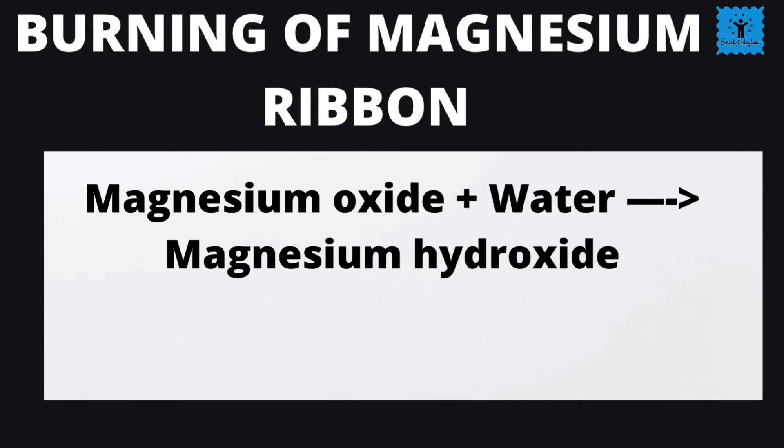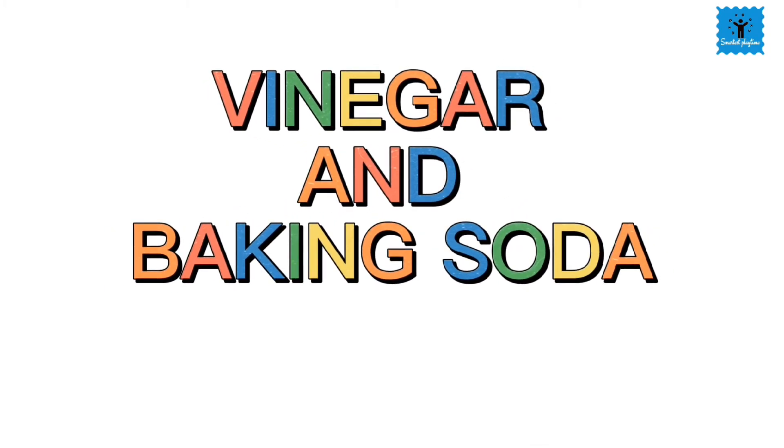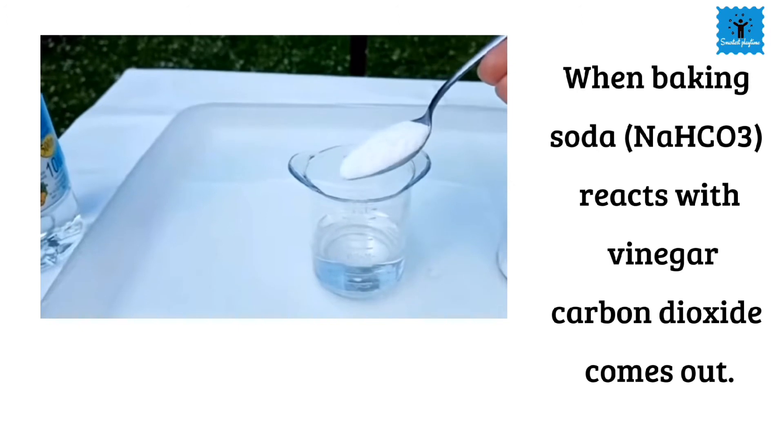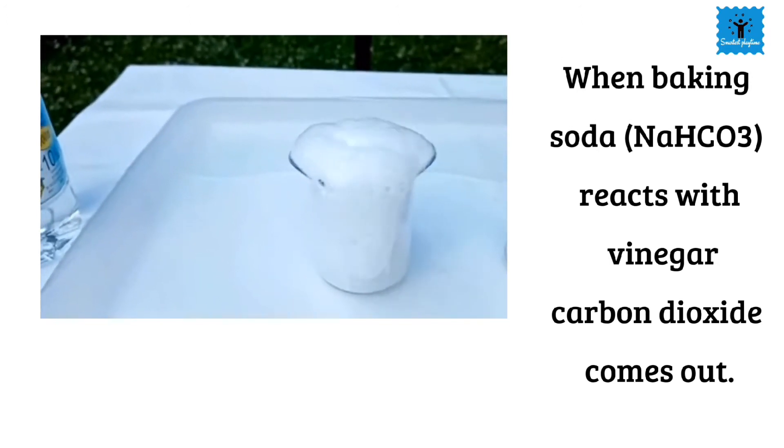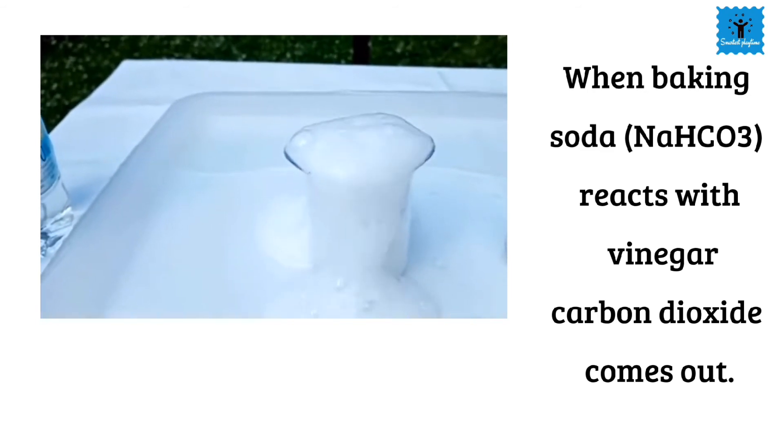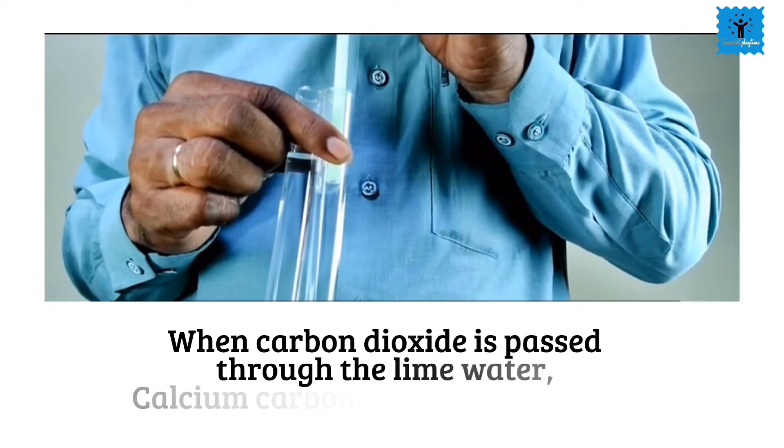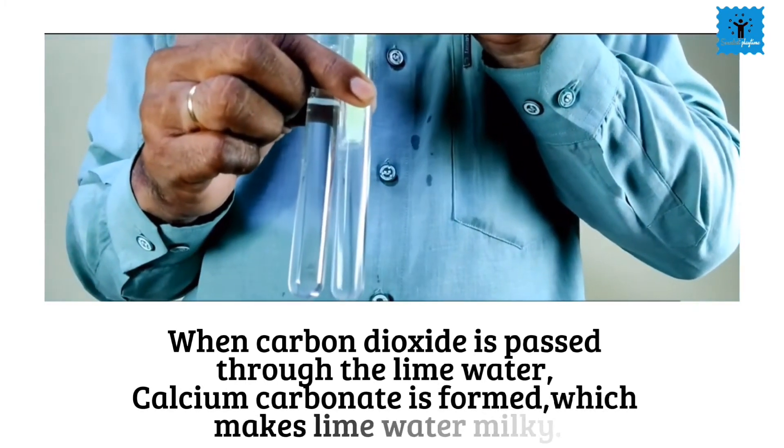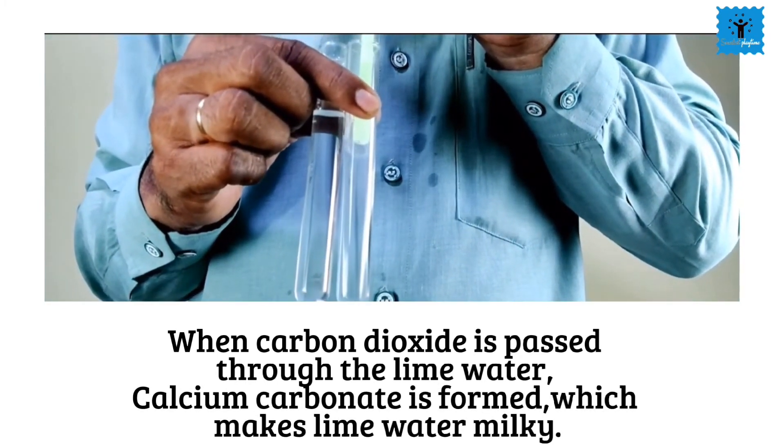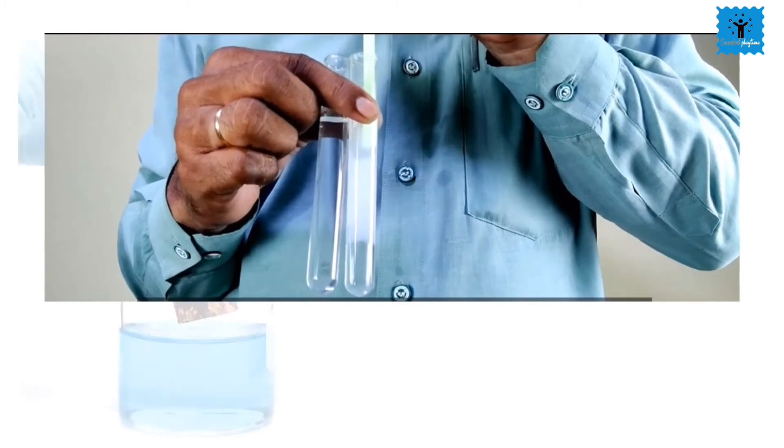Another example of chemical change is the reaction between vinegar and baking soda. Add little amount of baking soda in vinegar. You would hear a hissing sound and see bubbles of a gas coming out. This gas is carbon dioxide. When carbon dioxide is passed through lime water, calcium carbonate is formed which makes lime water milky. In this reaction, a new substance is formed which is calcium carbonate.